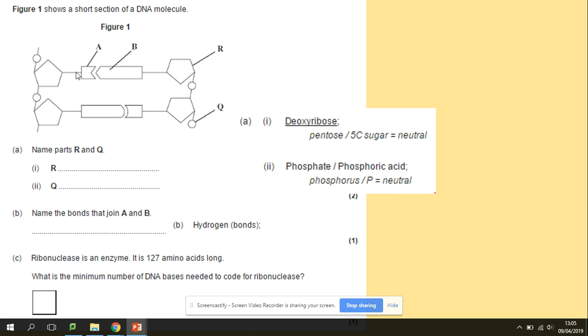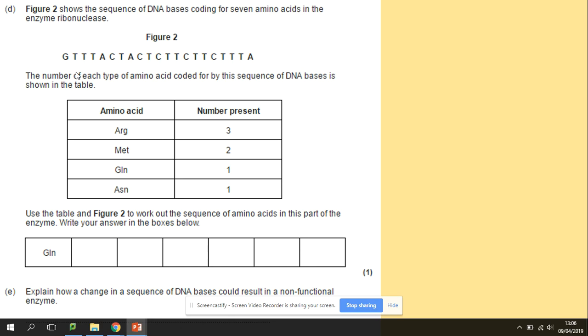And ribonuclease is an enzyme, and it is 127 amino acids long. So what is the maximum number of DNA bases needed to code for this enzyme? Easy thing to remember. Three bases are coding for one amino acid. So what do we need to do with this number? We need to multiply this by three to get the number of DNA bases.